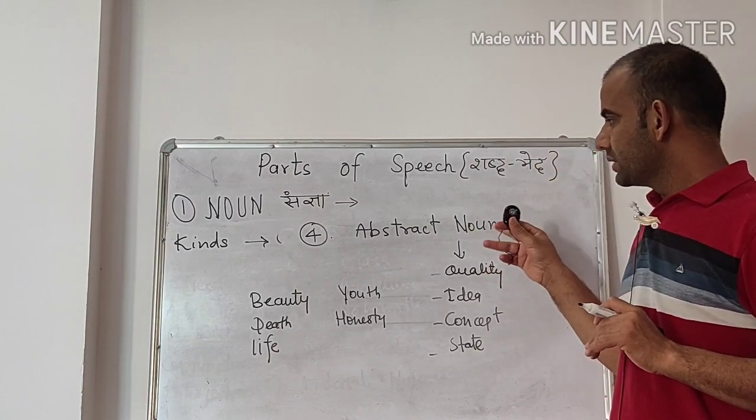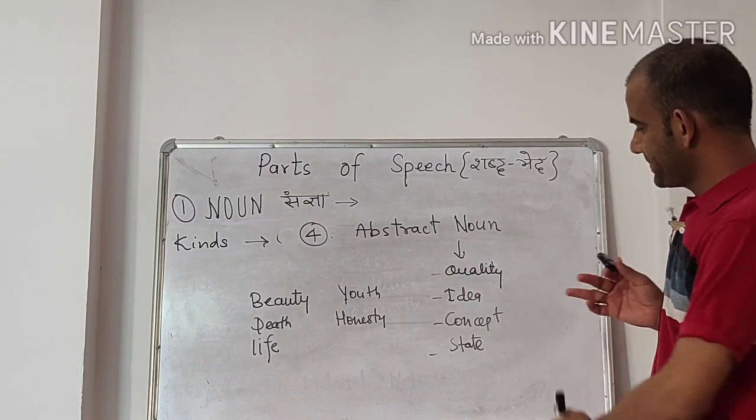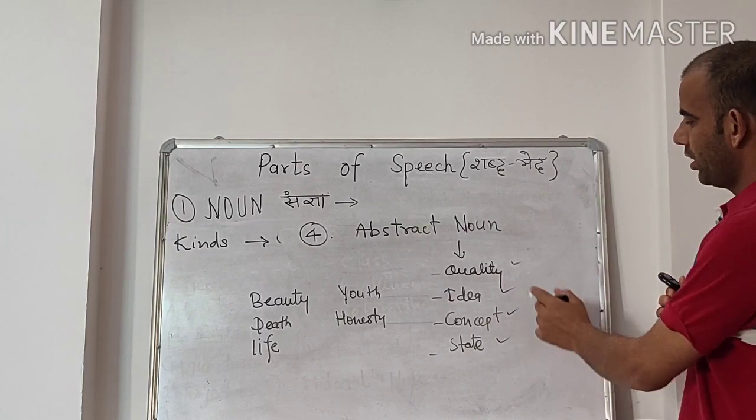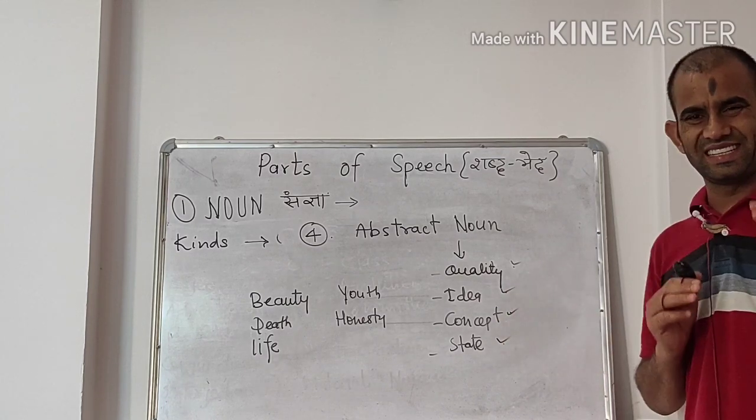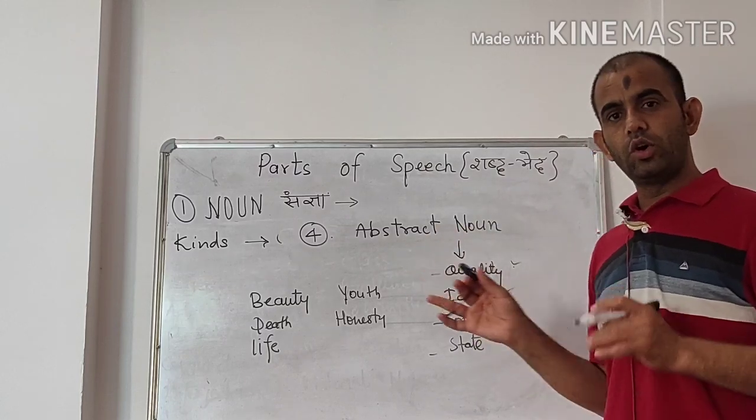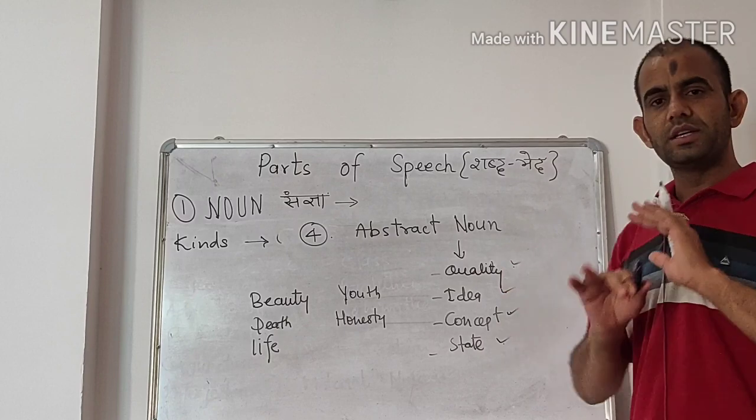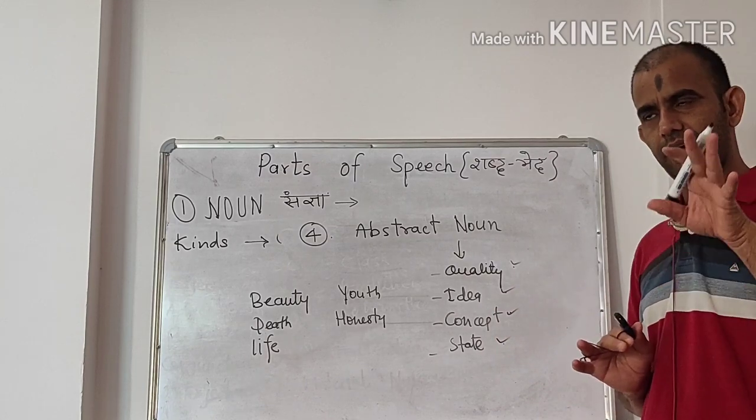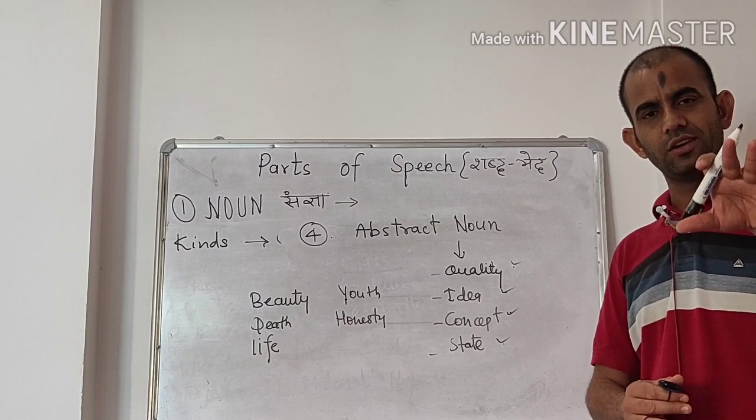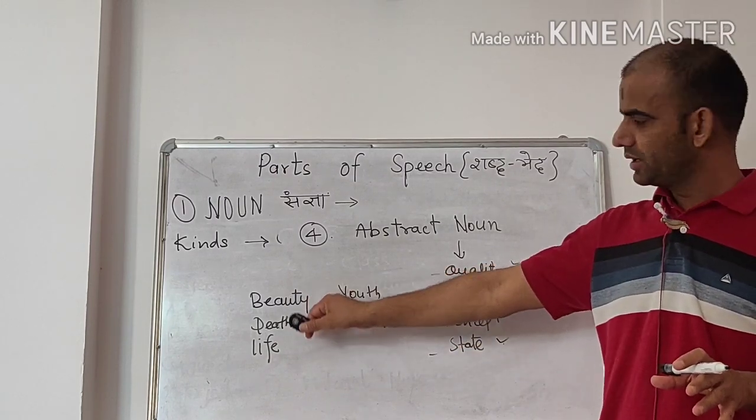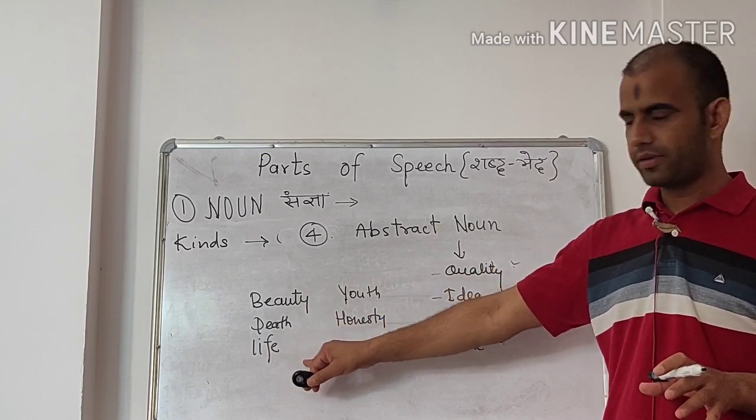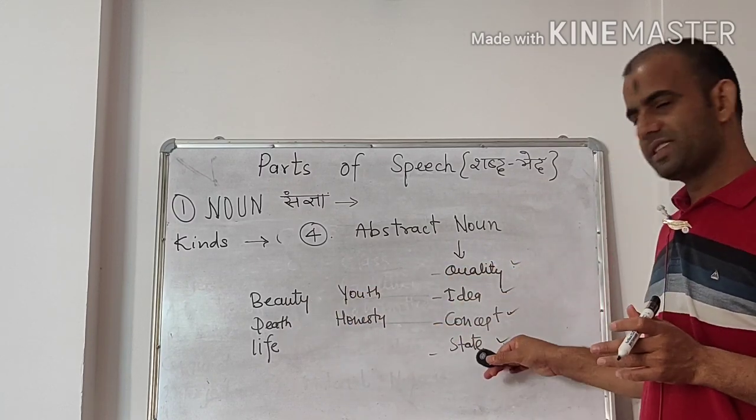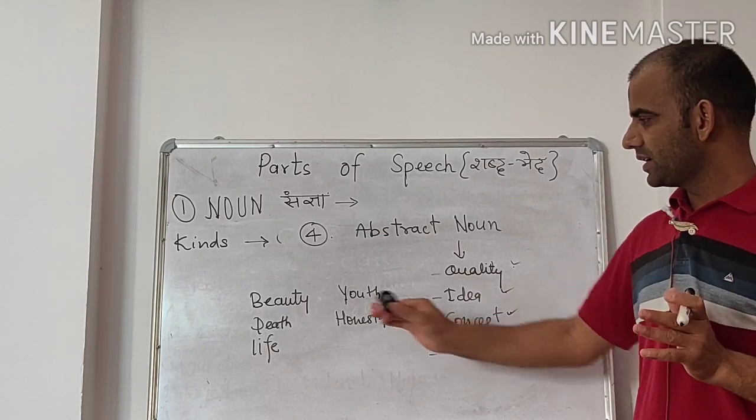What is an abstract noun? It is the name of a quality, idea, concept or state and this noun, the objects included in abstract noun are nameless. These are not tangible. We can feel them. We can't see or touch them like beauty, death, life, youth or honesty and so on. Beauty is a state. We can't touch. We can't see beauty. We can just feel it. So this is abstract noun.